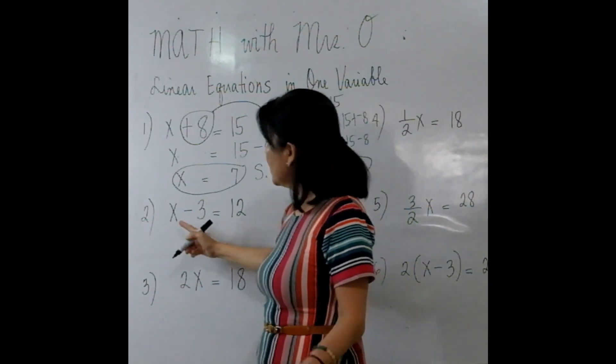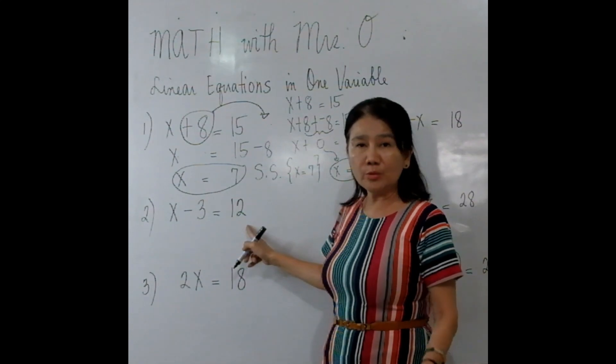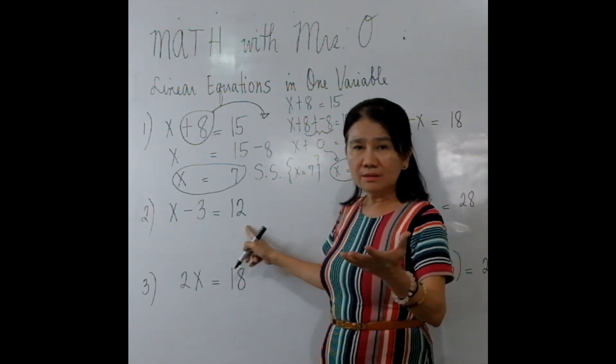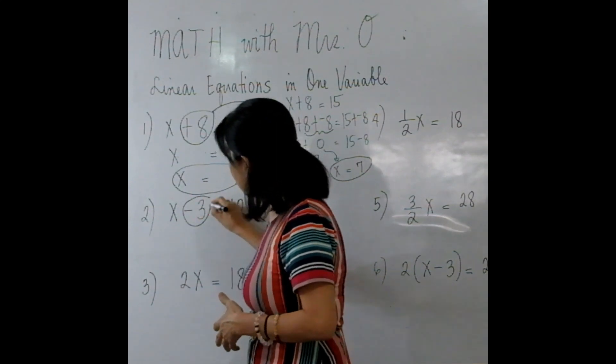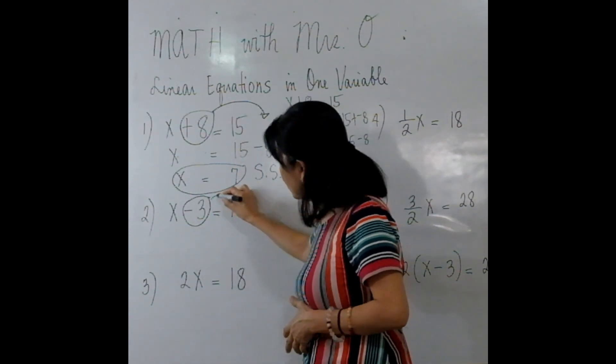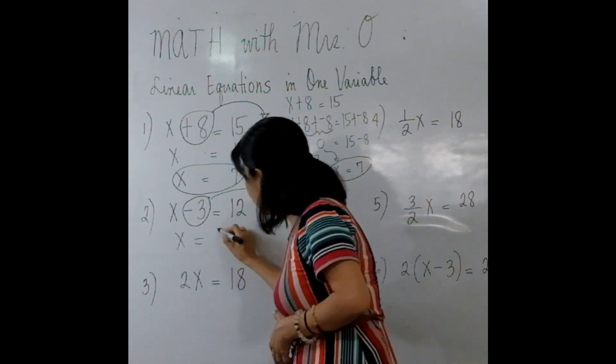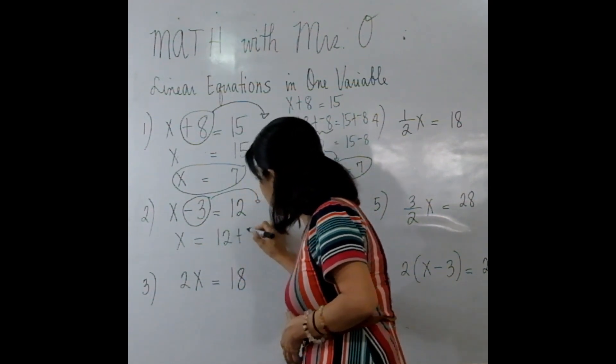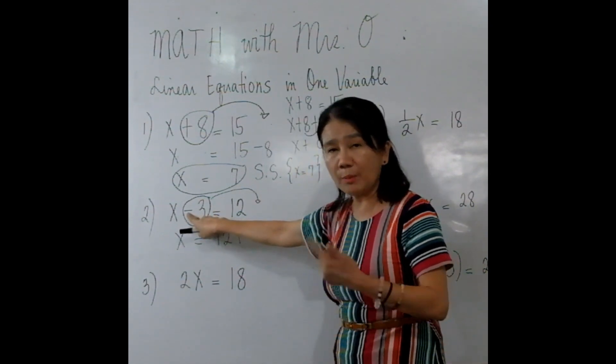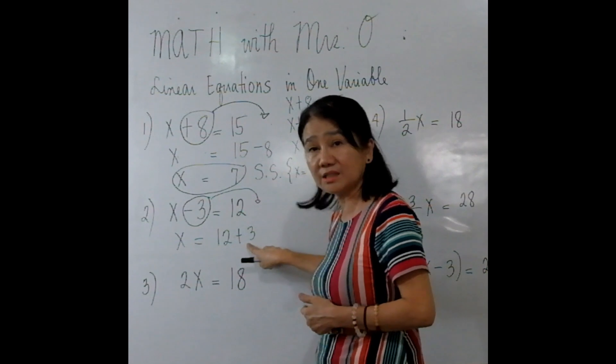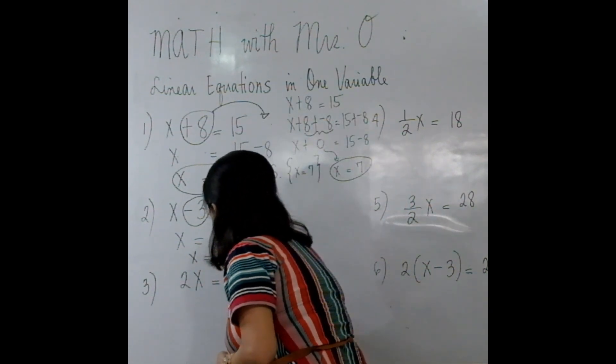Let's move on to the next one. If you have X - 3 = 12, we use transposition. So what do we do? We transpose negative 3 to the other side. So you copy X, you have 12 + 3. Take note, the negative 3 when transposed to the other side becomes positive 3. So now we write X = 15.